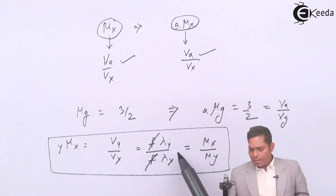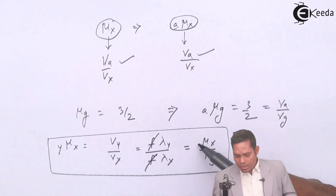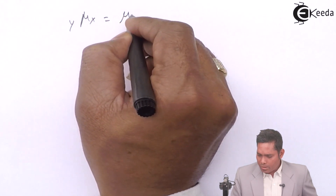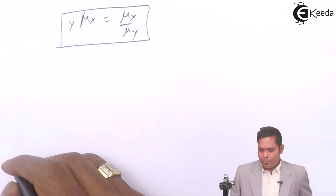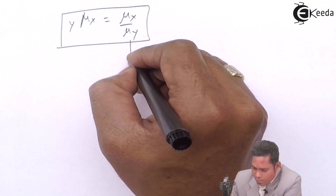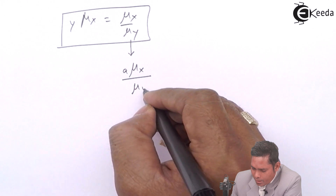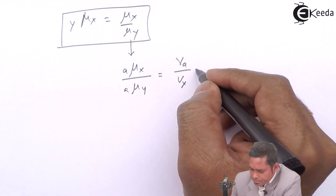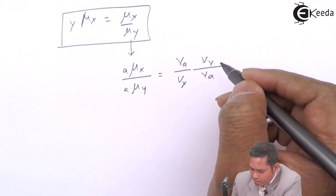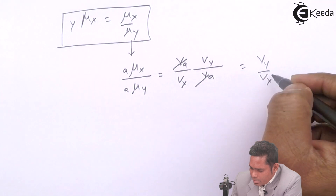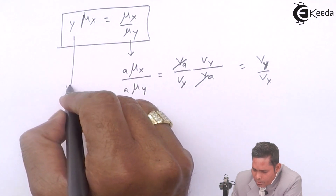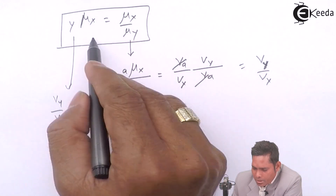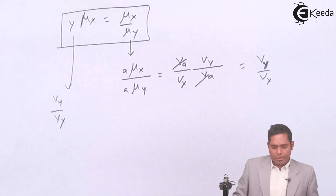You can prove that mu_xy equals mu_x divided by mu_y. Taking the right-hand side: mu_x is velocity in air divided by velocity in x, and mu_y is velocity in air divided by velocity in y. Dividing these, the velocity in air cancels out, leaving velocity in y divided by velocity in x, which equals mu_xy. These two expressions are equal. This is a very important conclusion to remember.